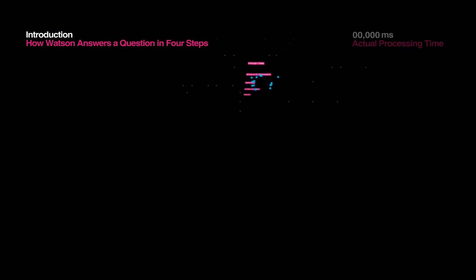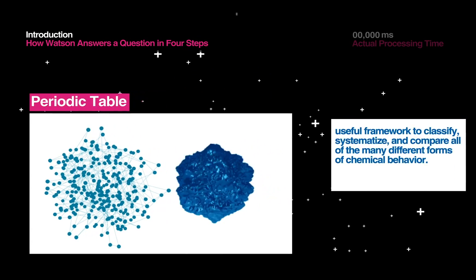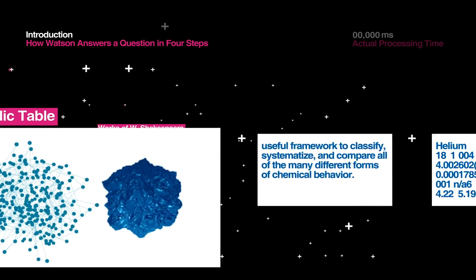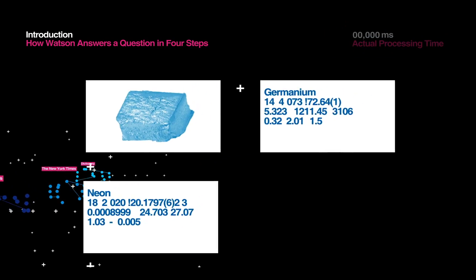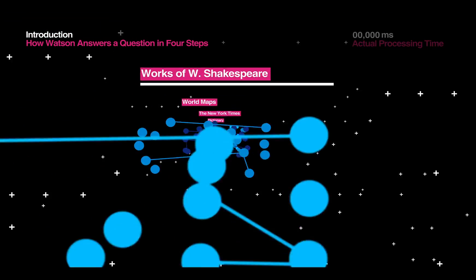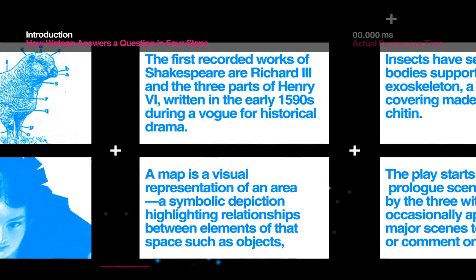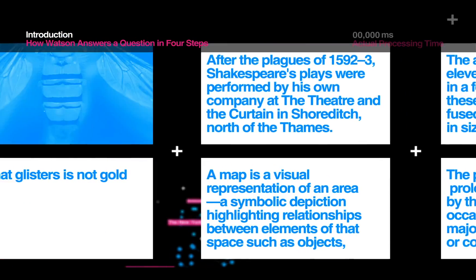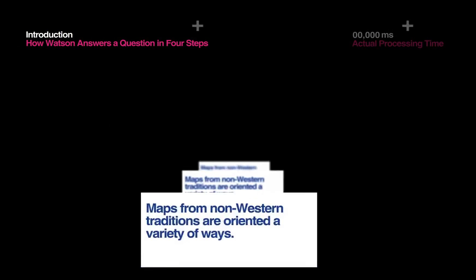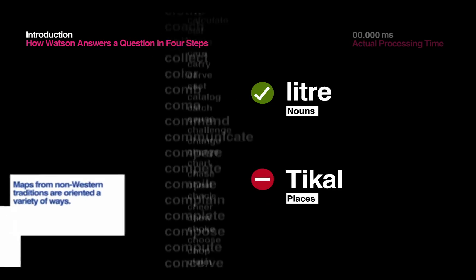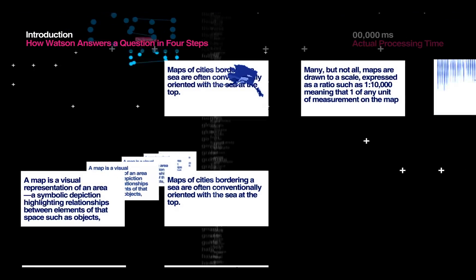How does a computing system reach a single answer to clues posed in human language? Unlike traditional databases designed for computers, real language is implicit, ambiguous, and full of complexity. That's one of the reasons why, until now, computer searches have only returned documents filled with keywords — it's been up to us to find the answers in those documents.